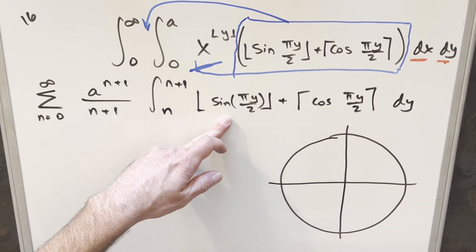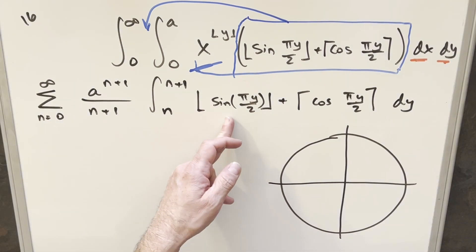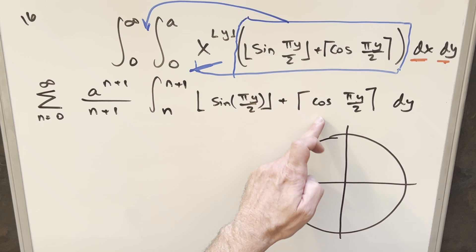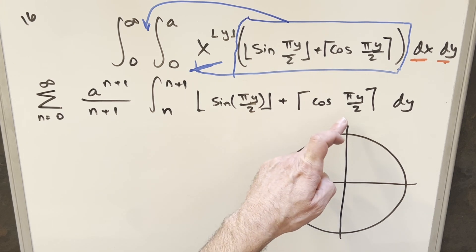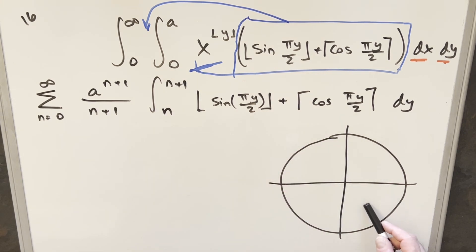Okay, so now from here, we just need to deal with the floor and ceiling, the floor of sine pi y over two, and the ceiling of cosine pi y over two. I thought the best way to do this is maybe we could look at the unit circle in terms of quadrants.